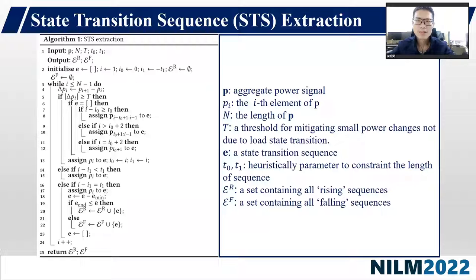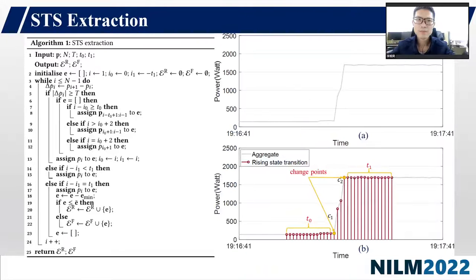Based on whether the ending entry in E is greater than its mean, sequence E can be labeled as rising or falling STS. Thus, its rising STS is grouped into set Epsilon_R, while its falling STS is stored in Epsilon_F, with E reset to empty after repeating the process. For all power variation symbols delta P_i, all rising and falling STS are stored in Epsilon_R and Epsilon_F respectively. As shown in the figure example, the aggregate power signal P is in subfigure A, and the rising STS pointed in red is in subfigure B, with two change points C1 and C2 colored yellow. T0 constrains the length of the sequence before C1, while T1 controls the length after C2.